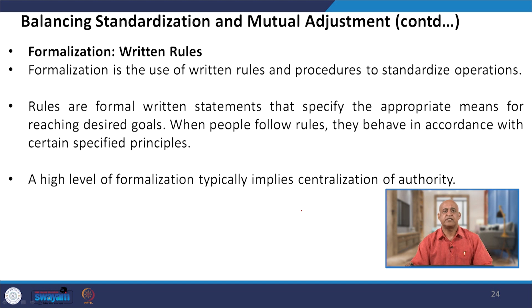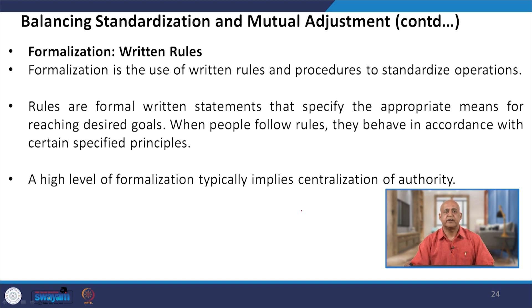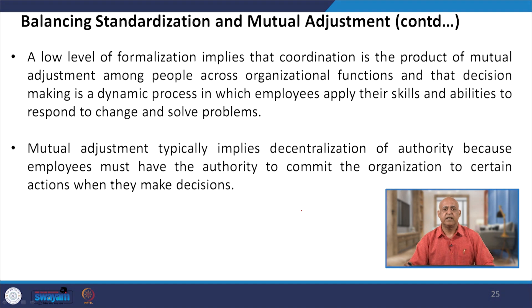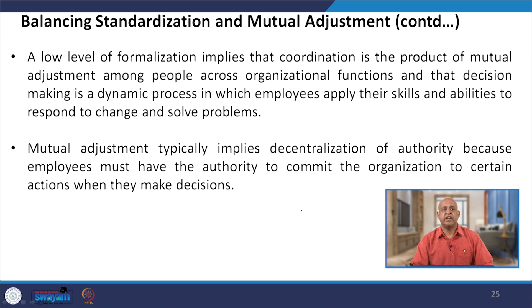Another way of achieving standardization and mutual adjustment is through formalization — the use of written rules and procedures to standardize operations. Rules are written statements that specify the appropriate means of reaching desired goals. A high level of formalization typically implies centralization of authority. A low level of formalization means coordination is the product of mutual adjustment, making decision making a dynamic process in which employees apply their skills to respond to change and solve problems. Mutual adjustment typically implies decentralization of authority, as employees must have authority to commit the organization to actions when making decisions.